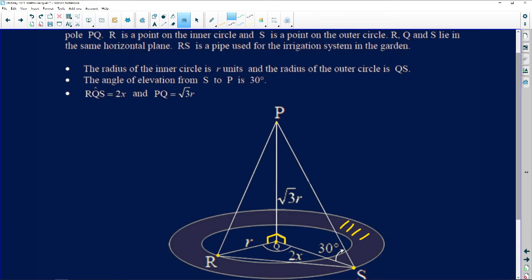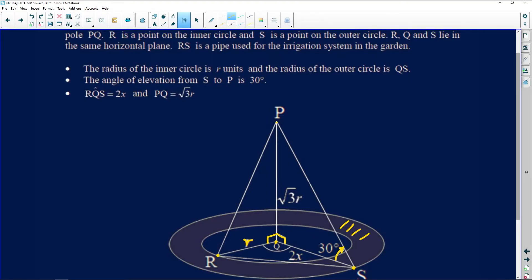So the radius of the inner circle, they tell us, that radius is R. And the radius of the outer circle is QS. The angle of elevation of P from S is 30 degrees. Now remember, if you elevate, you're going up. An elevator takes you up. If you're depressed, you're down. So an angle of depression faces down, an angle of elevation faces up. That's 30 degrees. Now immediately we know this is 90, so we have that definitely guaranteed as 60 degrees.